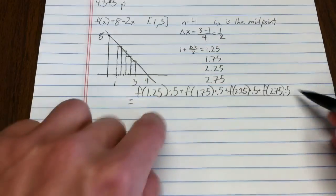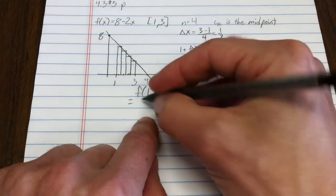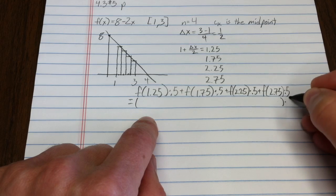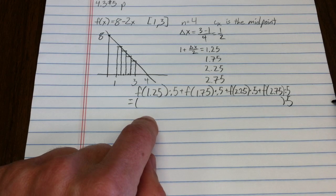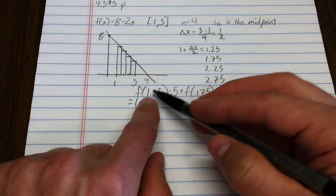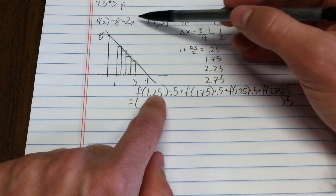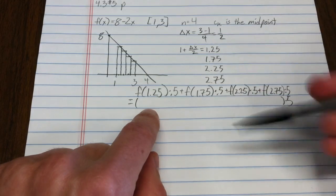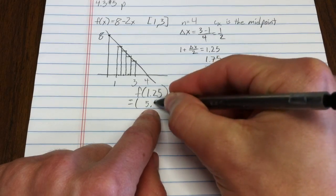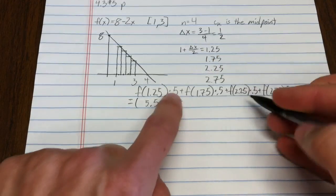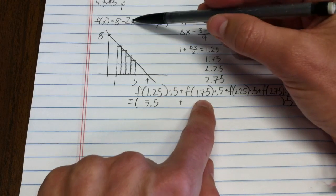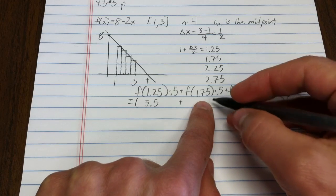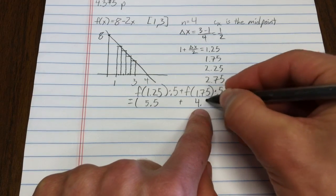Now, using distributivity, I'm going to factor out that 0.5. Why? Because that'll make it so I only have to do one multiplication instead of 4. f of 1.25. So 2 times 1.25 is 2 and a half, 8 minus 2 and a half is 5 and a half, plus, remember I'd factored that out, 1.75 times 2 is 3 and a half, 8 minus 3 and a half is 4 and a half.